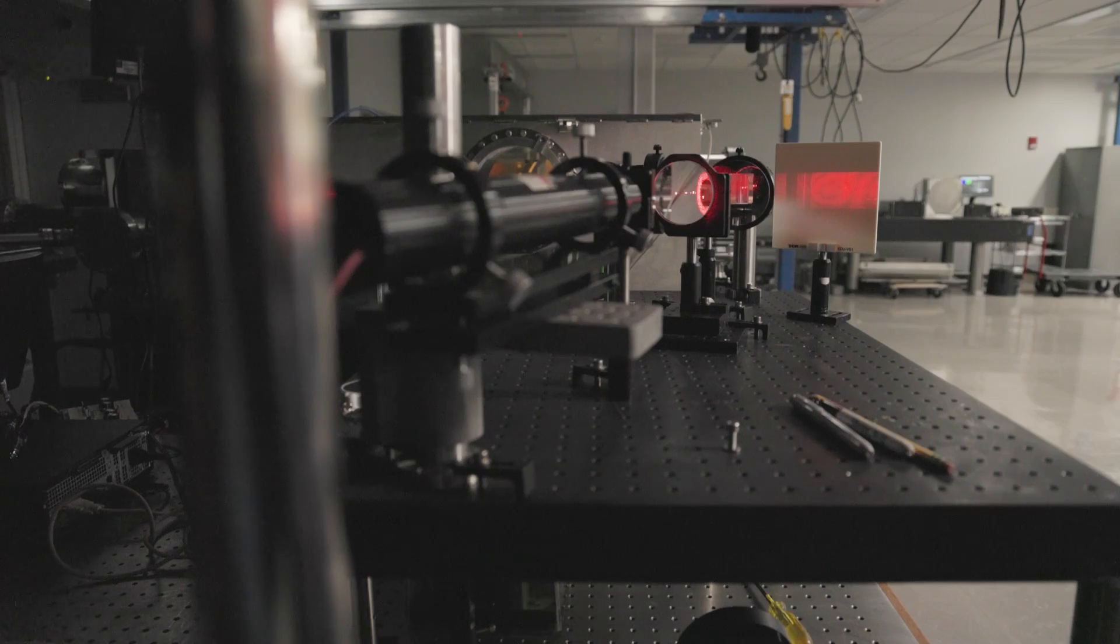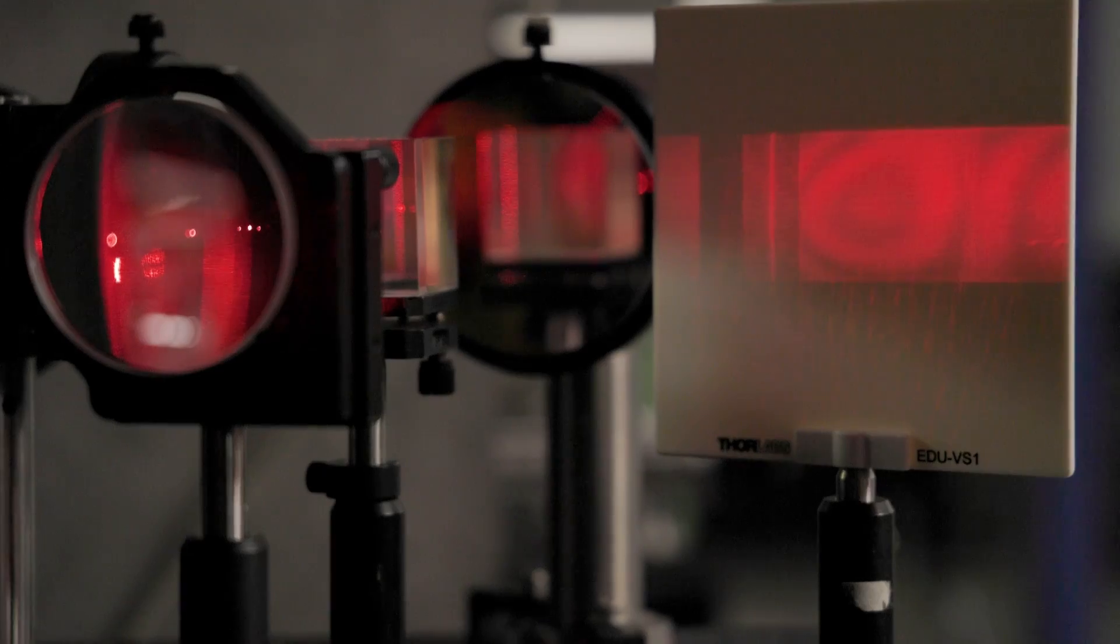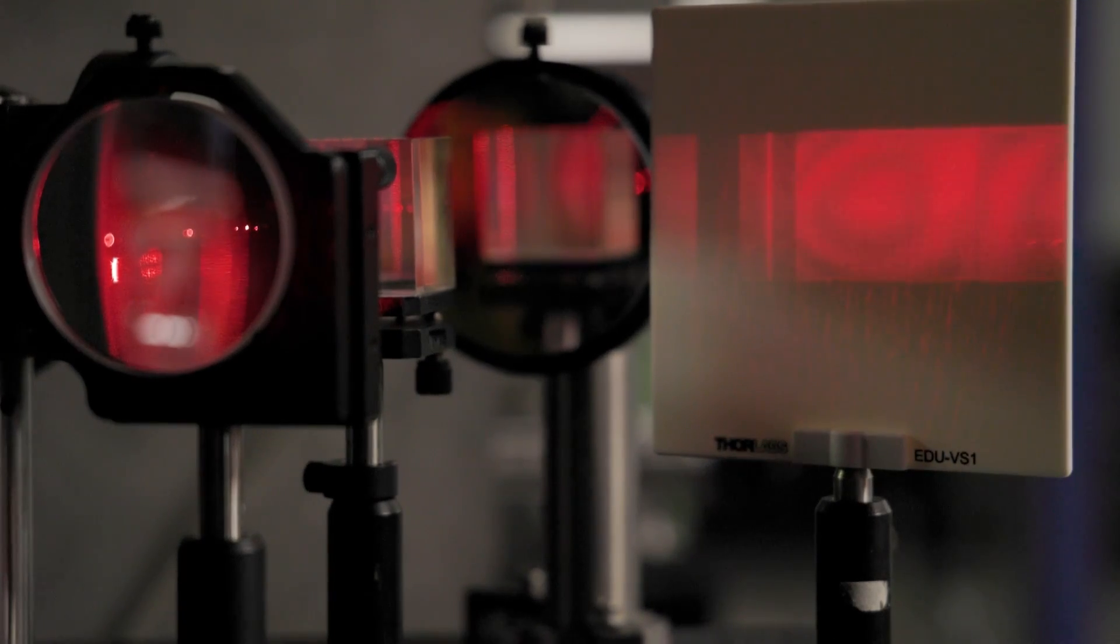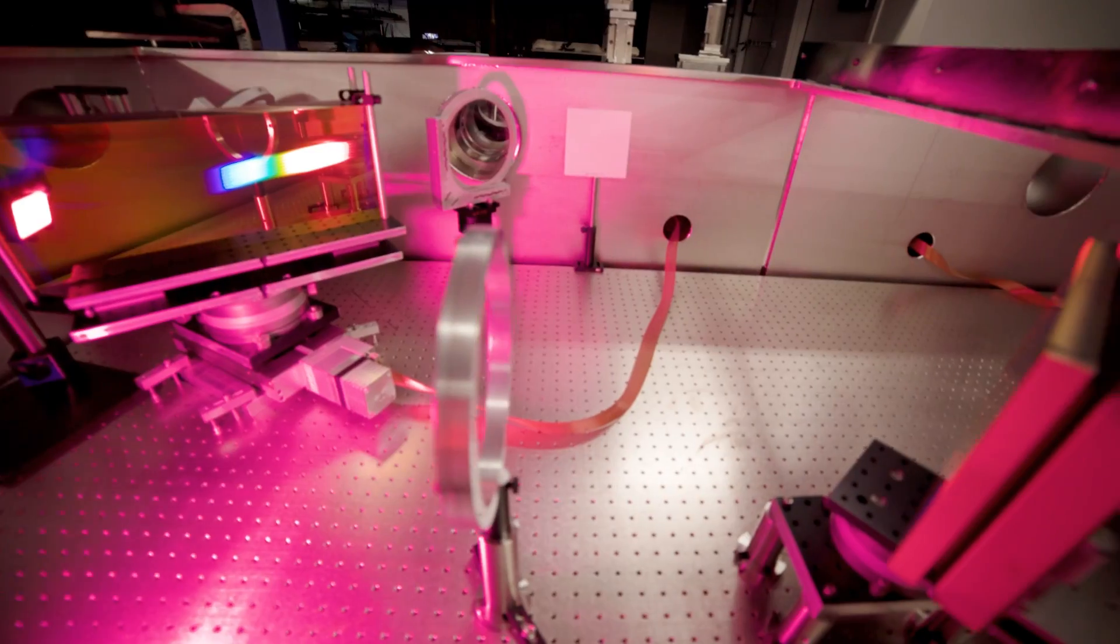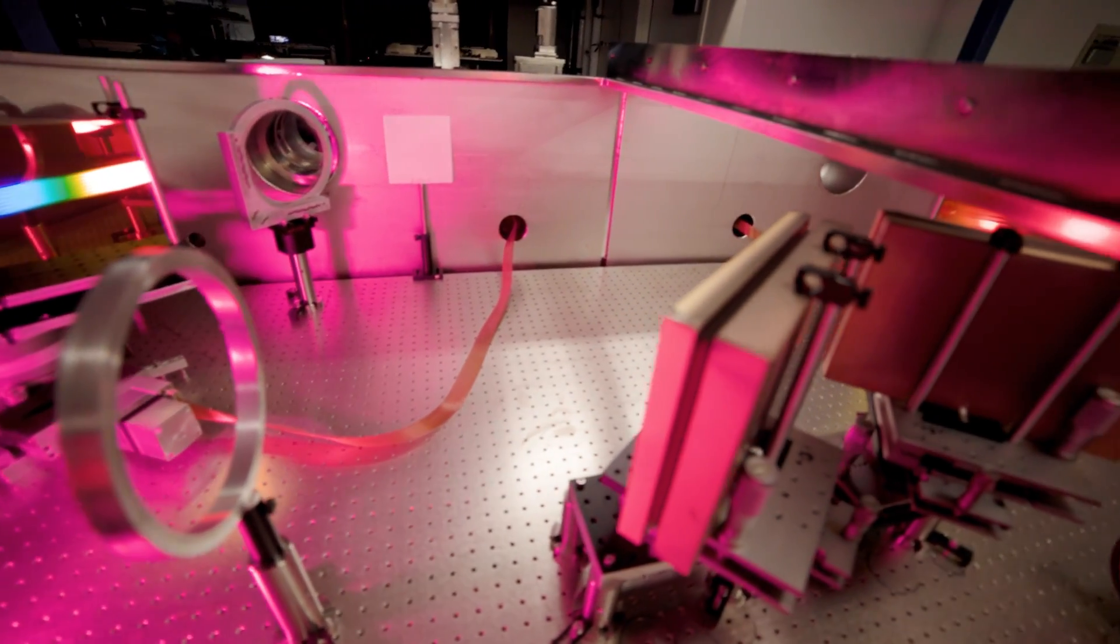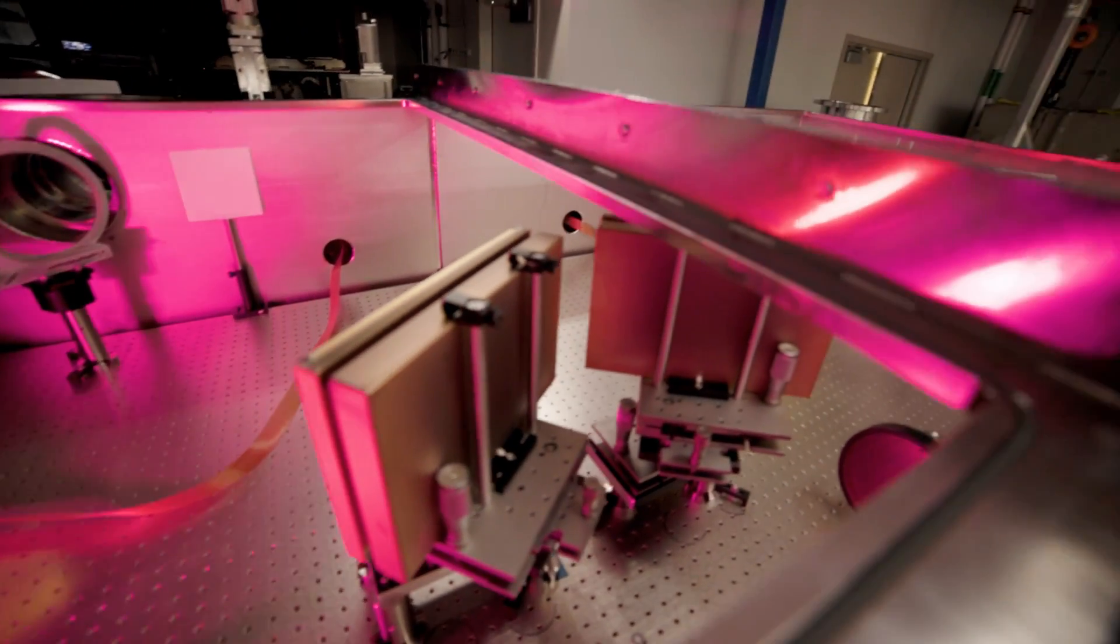A femtosecond is 10 to the minus 15 seconds. What we're trying to do is take one of these ultra short laser pulses and put as much energy as we possibly can in that laser pulse to make a very high power. The duration of the pulse will be extremely short and we're trying to put as much energy in the pulse as we can.